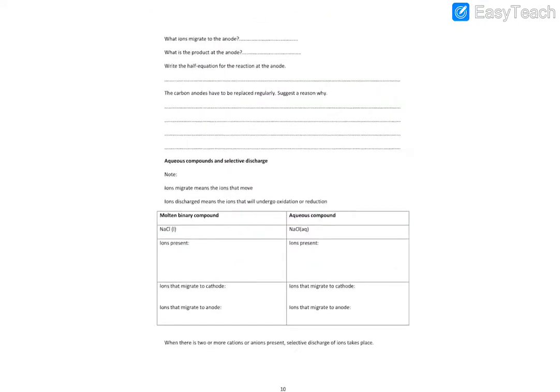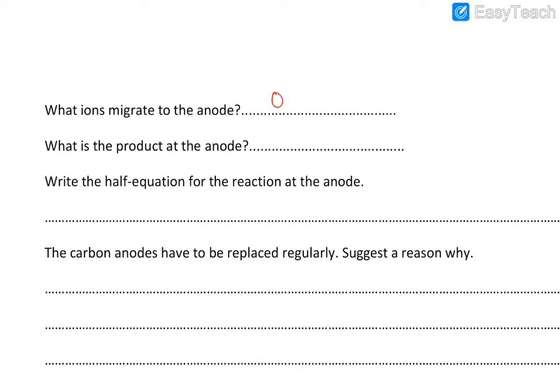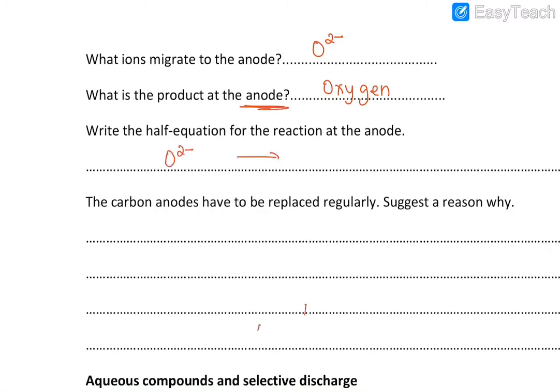At the anode, you're going to have oxygen ions that migrate. And the product is going to be oxygen gas. And the half equation at the anode will be an oxidation reaction. So O²⁻, this is going to produce electrons. This is going to produce oxygen gas. If you balance the equation, 2 oxygen. So I put 2 oxygen. Therefore, the charge becomes 4 minus. So I need to put 4 electrons.